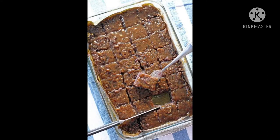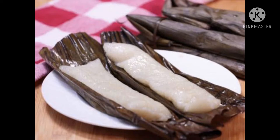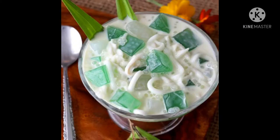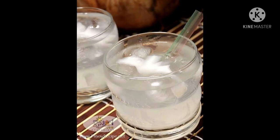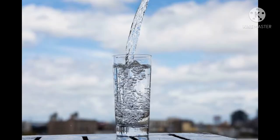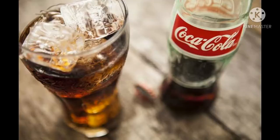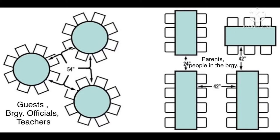The desserts will be biko, sumar or budbud, and buko salad. The beverages will be buko juice, water, and Coca-Cola. This is the table layout — on the left side is where the guests, the barangay officials, and the teachers will be seated, and on the right side will be the parents and the people in the barangay.